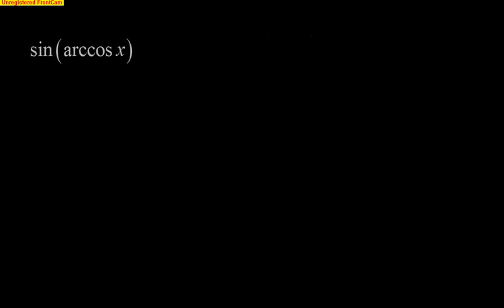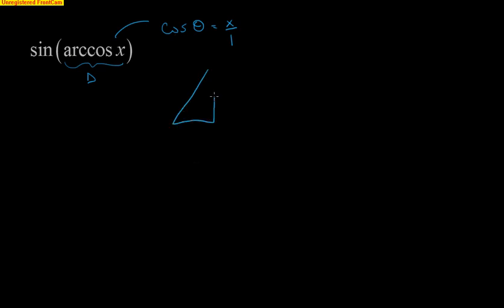This time we don't have numbers — we have a variable, and we'll see this in calculus later with trig integration. We do the same kind of process: make a triangle with the inside. Arccos(x) means the cosine of some angle theta equals x. Writing cosine as adjacent over hypotenuse, we express that as x over 1. Drawing the triangle with theta, cosine is adjacent over hypotenuse, so the adjacent side is x and the hypotenuse is 1.